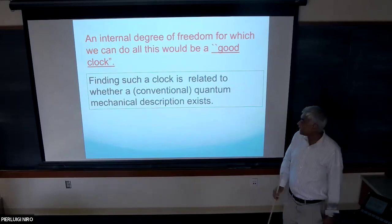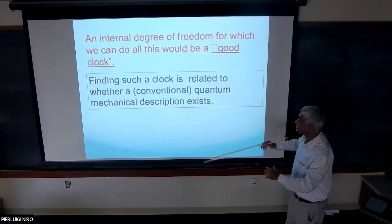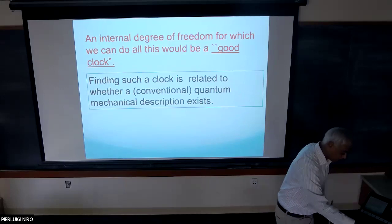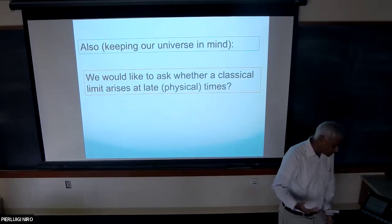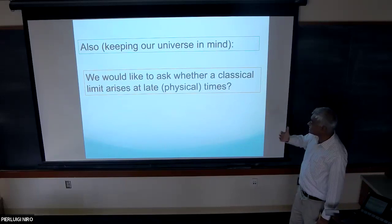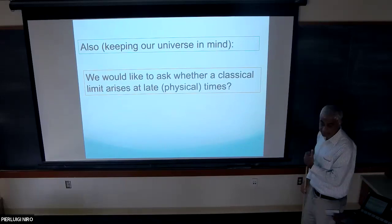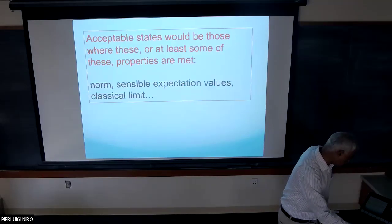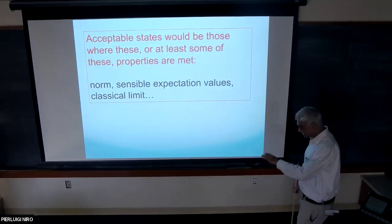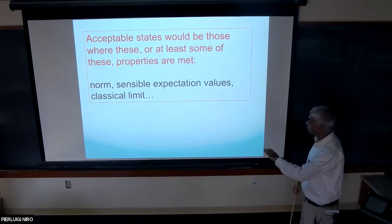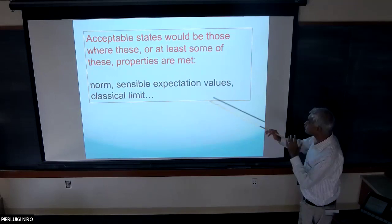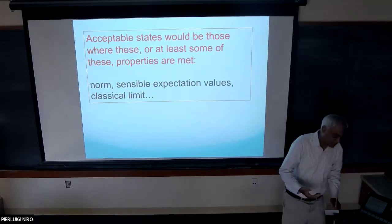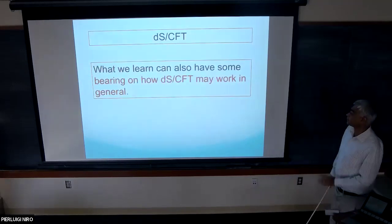If such a clock exists satisfactorily in some epoch, then one hopes to recover conventional quantum mechanics in that epoch, or maybe for the entire history. It's also important to ask: can a classical limit arise at late times, like our universe, or does such a classical limit never arise? Do you always continue to have interference between different branches as the universe evolves? You might impose various criteria: you want a Hilbert space with states of finite norm, finite expectation values, a good classical limit — and then ask how many states satisfy those criteria. This is the kind of question one would like to explore as one tries to understand quantum gravity in a cosmological context.